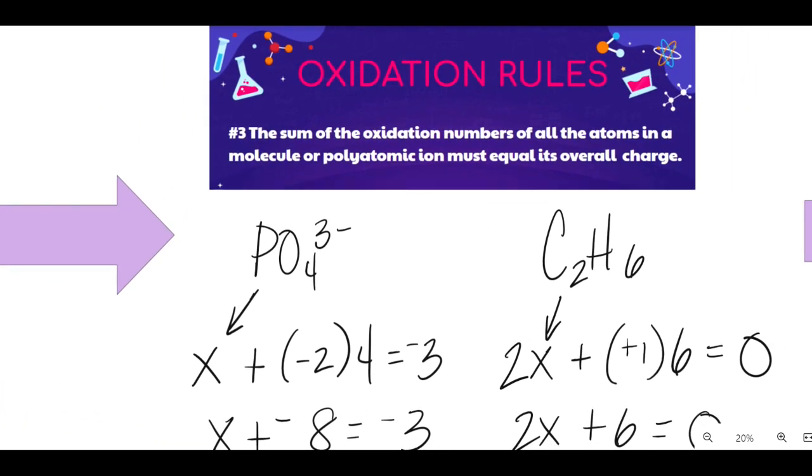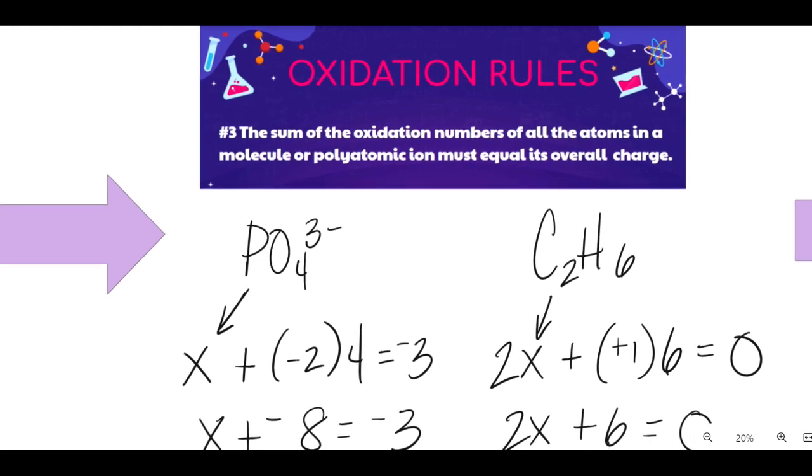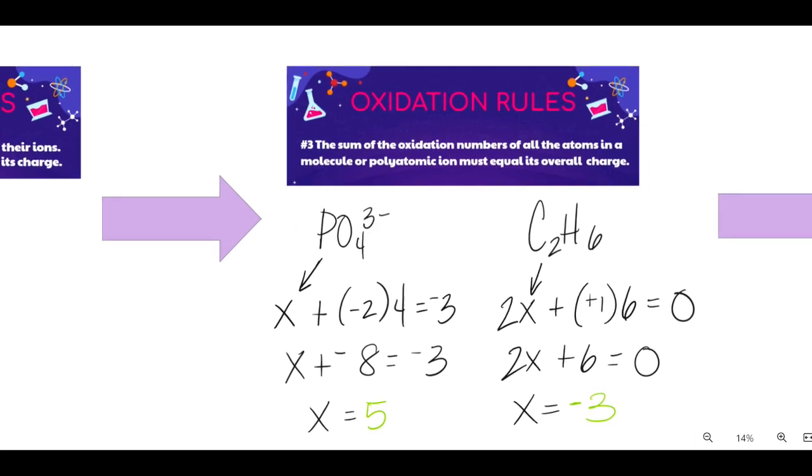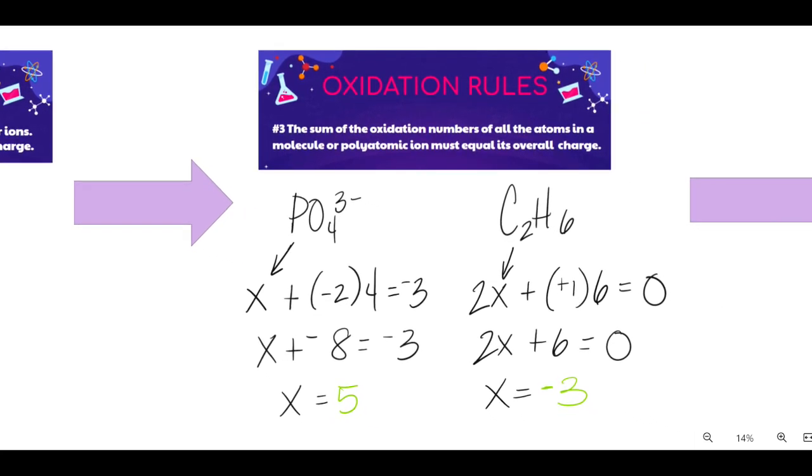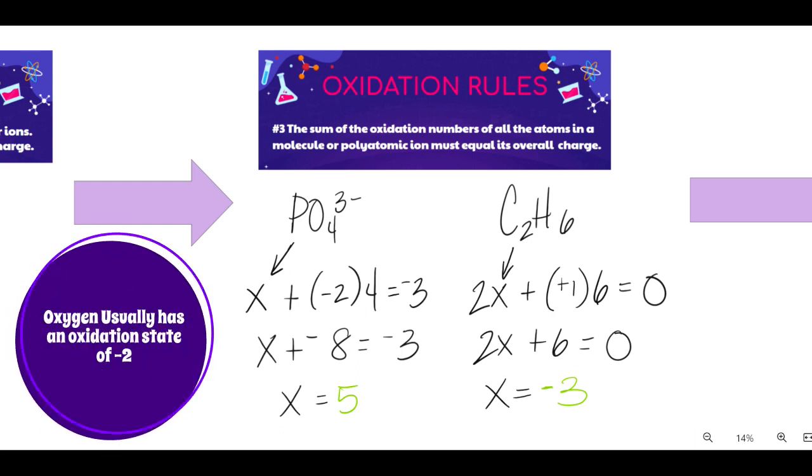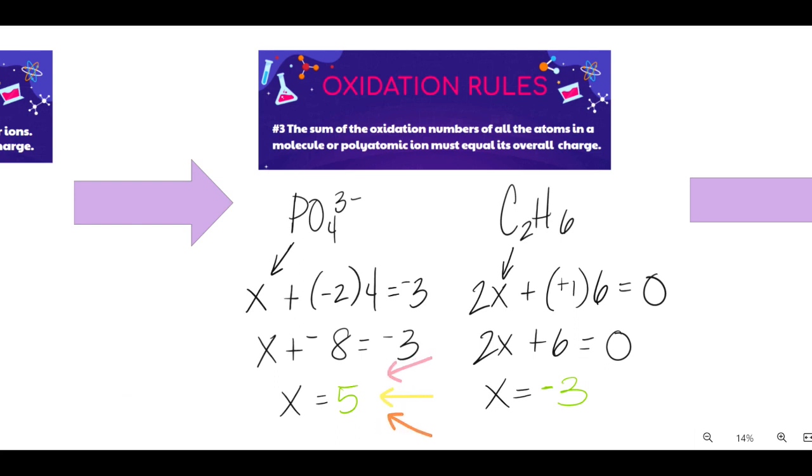Rule number three. Now we're going to use some algebra. The sum of the oxidation numbers of all the atoms in a molecule or polyatomic ion must equal its overall charge. So for example, take a look at the phosphate polyatomic ion. Because its charge is three minus, when I add up all of the oxidation numbers of the phosphorus and the four oxygens, the sum must be negative three. Now I use X to represent the oxidation state of phosphorus because I don't know what it is. You'll see in rule number four that we can assume oxygen to have an oxidation state of negative two. And I'm multiplying that by four because there are four oxygens. Now I just solve for X and I find that phosphorus has an oxidation number of positive five.